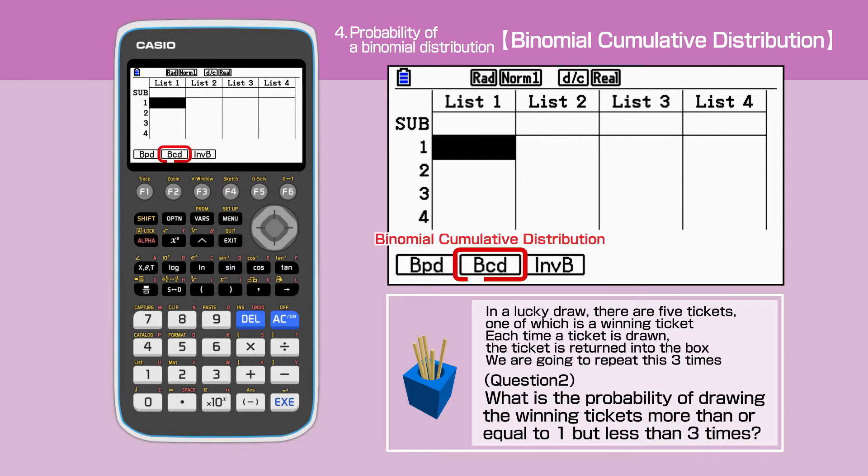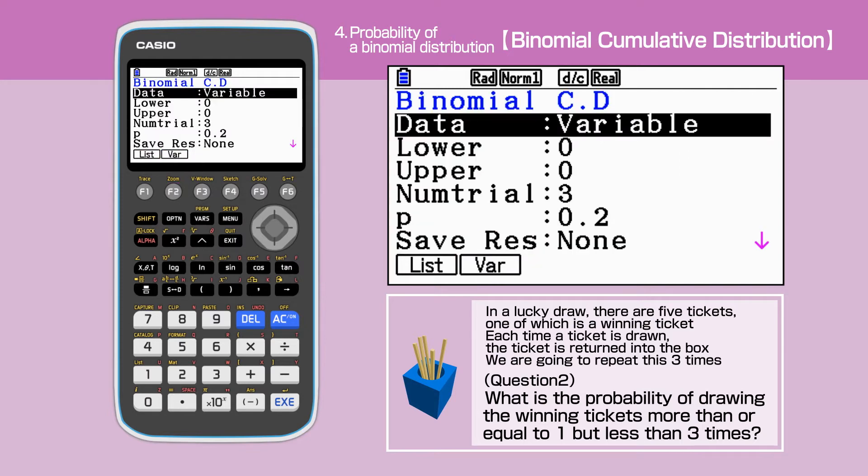Press F5 to select binomial cumulative distribution, as we are finding the sum of the two probabilities for question 2. Set the data to variable by pressing F2.